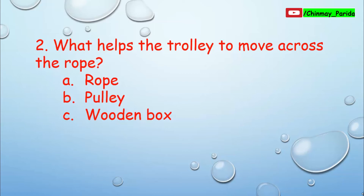Question number 2. What helps the trolley to move across the rope? You learned about how a trolley works — how children in wooden boxes cross the uneven lands to reach their school in mountain areas. Option A: rope, option B: pulley, option C: wooden box. Rope is not the correct answer. The correct answer is option B, pulley. The pulley helps the trolley to move across the rope.